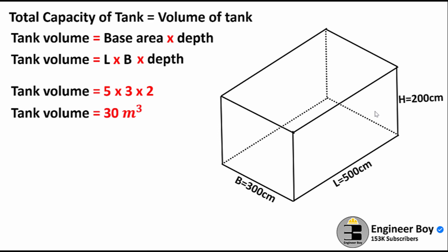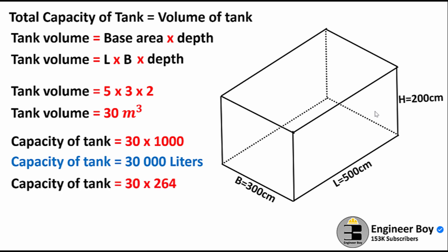You can also convert this into liters. If you multiply the volume with 1000, it's going to be 30,000 liters. You can also convert this capacity into gallons if you multiply the volume of tank with 264, and that's the capacity of the tank, which is 7,920 gallons. That's so simple.